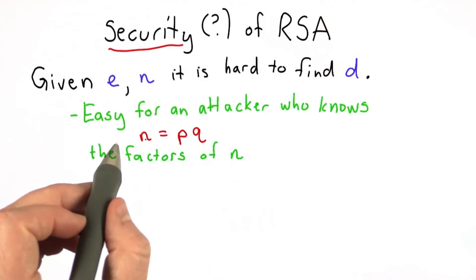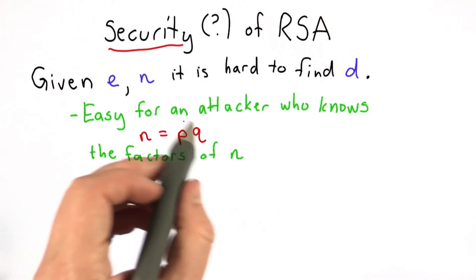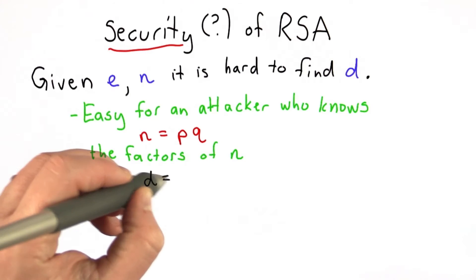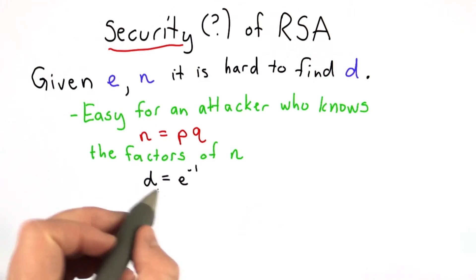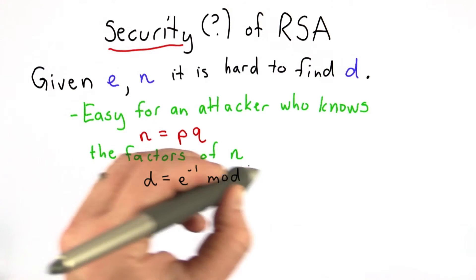So the first thing we know is that this would be easy for someone who knows the factors p and q, the two large primes that we multiplied to get n. And we know that because such an attacker could compute the multiplicative inverse of e mod the totient of n.